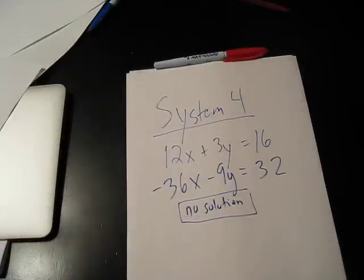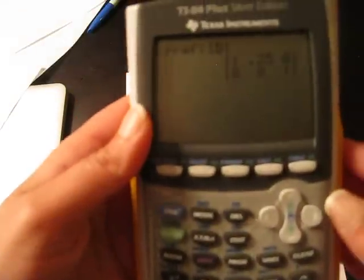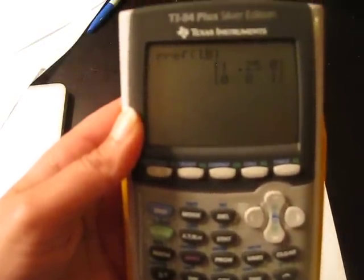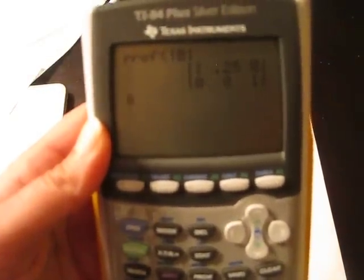That tells you it's infinitely many solutions. And no solution kind of has a similar look to it, but no solution is going to look like zero zero one in the last column. That's going to tell you the answer is no solution.